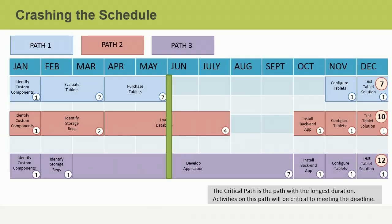Let's say that today is June 1st and you are in the middle of a 12-month project. Everything has been progressing well and your project is on schedule. You are also proud of the fact that you have been coming in under budget. Then you receive a visit from your sponsor that changes everything. Your sponsor says: due to unexpected circumstances, we must finish this project one month early. We must be finished by the end of November, no matter what it costs. Just get it done.